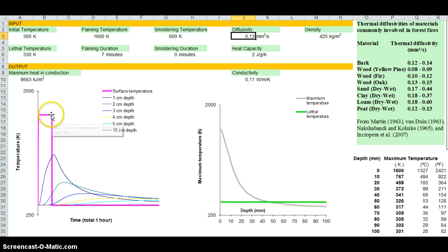Then you have the characteristics of the material of the bark or of the soil. And you have some indications of what would be the typical diffusivities of different materials involving forest fires. So when you talk about bark, the common value to input is something between 0.12 and 0.14. So 0.13 would be a good value to use.